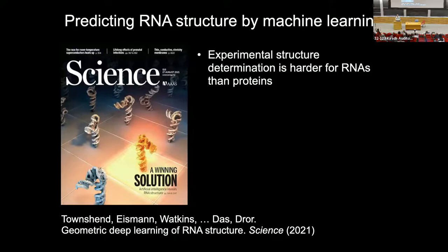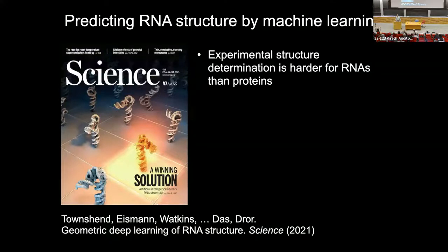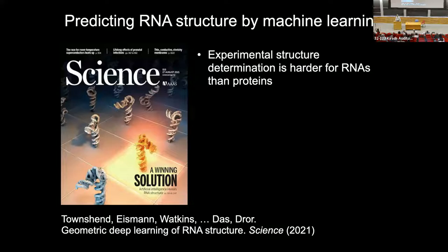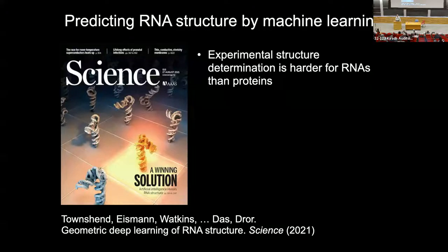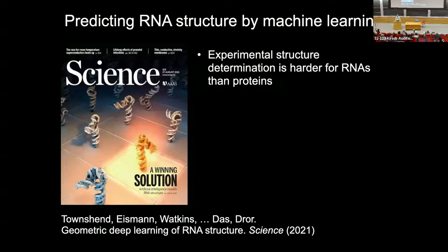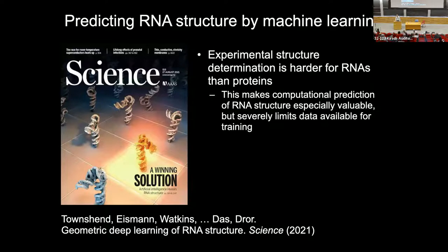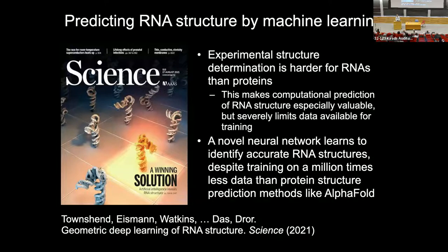There's a big problem though, which is it's really hard to figure out the structures of the RNAs. It's harder to determine RNA structures, much harder than protein structures, and it turns out to be harder computationally also. Part of the reason it's harder computationally is that there's just a lot less experimental data to work with, to learn from. But the fact that it's hard to get these structures experimentally makes it even more desirable to predict them computationally. In a nutshell, we came up with a method that predicts RNA structures given very little data to train on.